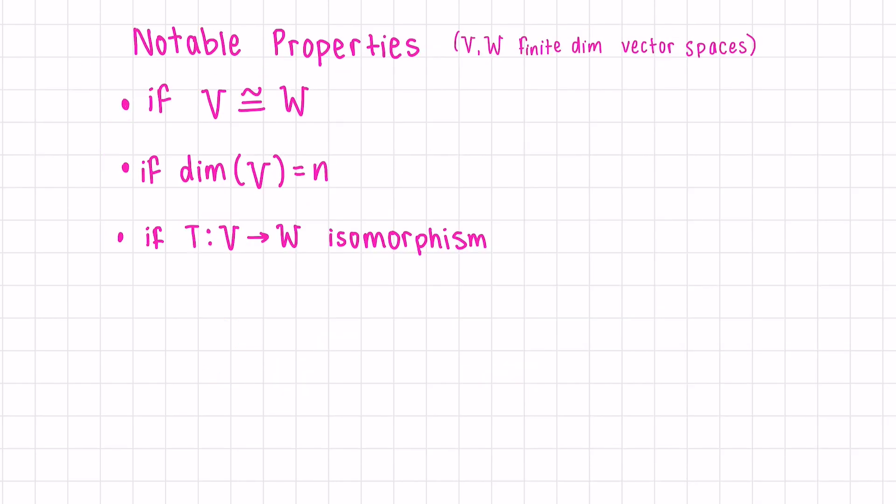Next, let's go over a few properties. If V is isomorphic with W, this is only true if the dimension of V is the same as the dimension of W. This follows from the fact that in order to be isomorphic, the transformation from V to W must be bijective, which is only true when the dimension of the domain and the codomain are equal.